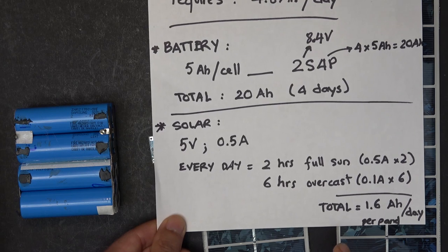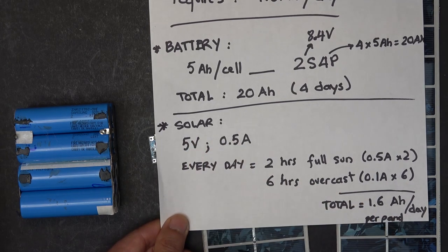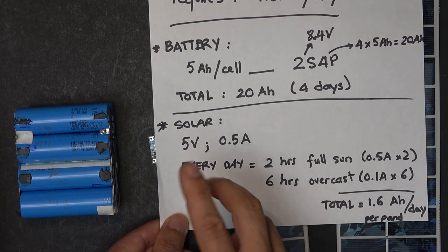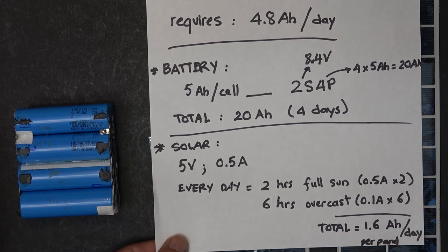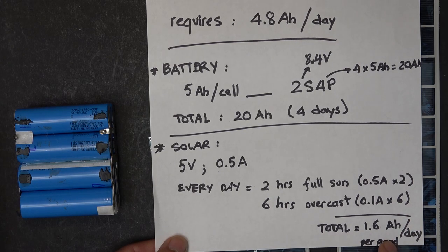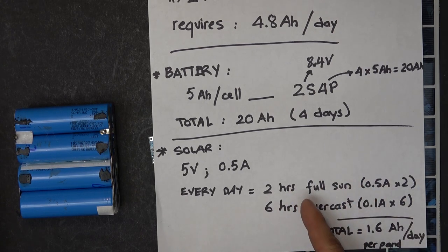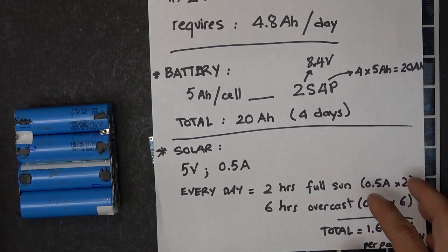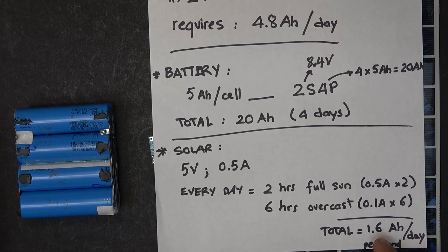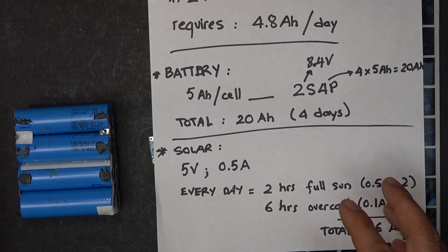So the total is 1.6 amp hours per day per solar panel. But the controller requires 4.8 amp hours per day and that's three times the solar output, so I need to put three of these solar panels in parallel. If we take 1.6 amp hours times 3, we get 4.8 amp hours. But this is in ideal conditions - on the days when it's rainy or overcast all the time, I don't produce this much power.